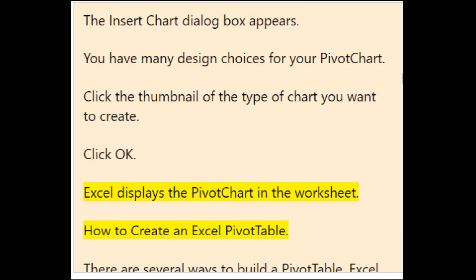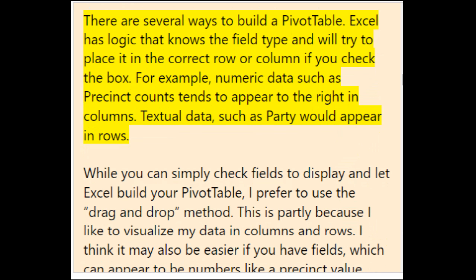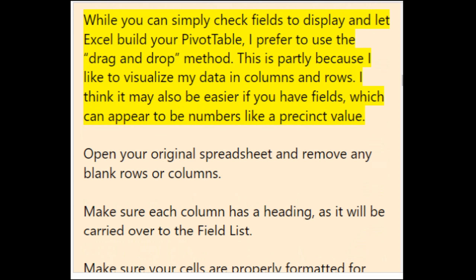There are several ways to build a pivot table. Excel has logic that knows the field type and will try to place it in the correct row or column if you check the box. For example, numeric data such as precinct counts tends to appear in columns, while textual data such as party appears in rows. I prefer to use the drag-and-drop method because it helps visualize data in columns and rows.